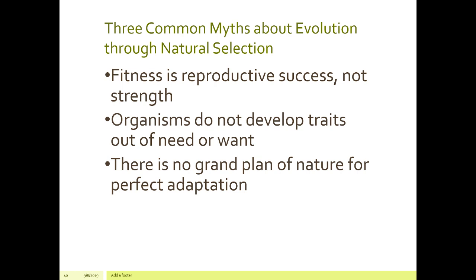Some myths about evolution through natural selection: fitness is reproductive success, not strength. Just because a species is stronger doesn't mean it has the ability to reproduce, and that is what's important — the ability to pass genes on to the next generation. Organisms don't develop traits just because they want to or need to. A common myth is that humans have less hair now because we have air conditioning and heating and no longer need hair to stay warm. In reality, that doesn't have a significant effect. Many people still have a lot of hair. We didn't just decide we don't need as much hair and evolve — that's not how it works.